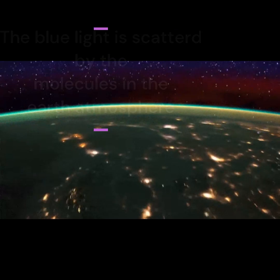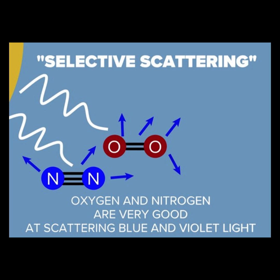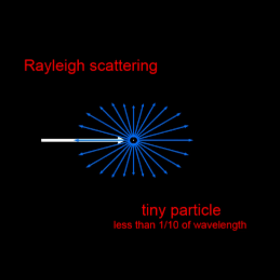The molecules in the atmosphere, largely nitrogen and oxygen, scatter the blue and violet light in every direction through a phenomenon called Rayleigh scattering. It is because of this Rayleigh scattering